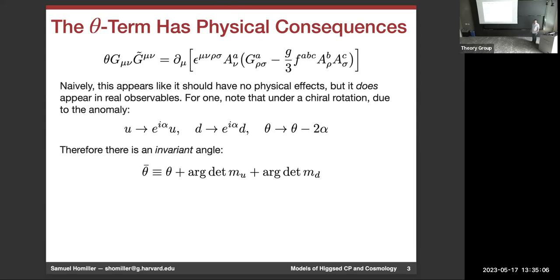The first time you see this in a graduate class, you might see it written that the theta G G-dual term can be written as a total derivative. You might be surprised that this has any physical consequences, because usually if you see something in the Lagrangian that's a total derivative, you integrate it out and throw it to the boundaries. But in this case, it completely does have important physical consequences. This theta parameter appears in real observables you can actually measure. If you do a chiral rotation or field redefinition of the quarks, it shifts the theta parameter by whatever angle you're doing, so there's really an invariant angle.